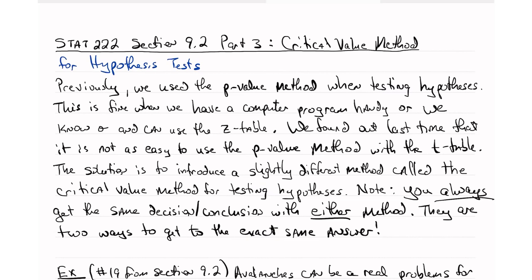Previously, we've used the p-value method when testing hypotheses. This is fine when we have a computer program handy to calculate p-values for us, or we know sigma and we can use the z-table. But we found out last time that it's not as easy to use the p-value method with the t-table. In other words, when we don't know sigma, when we only have the sample standard deviation S to estimate or approximate sigma.